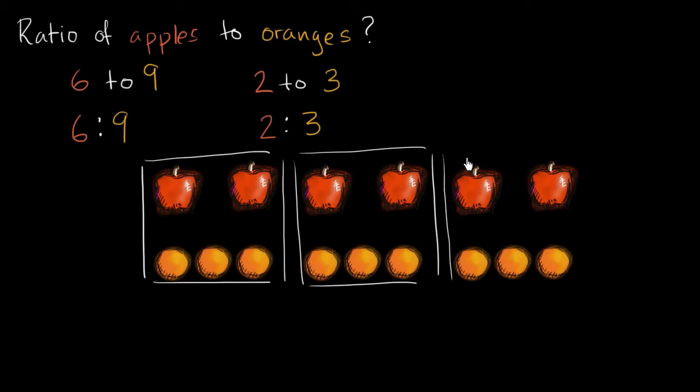and three equal groups. We see that in each of those groups for every two apples we have three oranges. For two apples we have three oranges. For two apples we have three oranges. So once again, the ratio of apples to oranges, for every two apples we have three oranges.